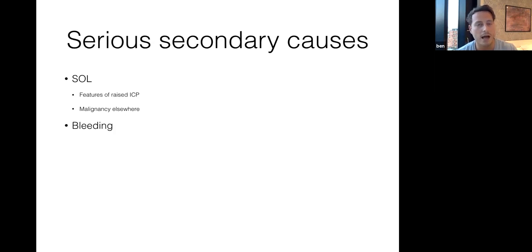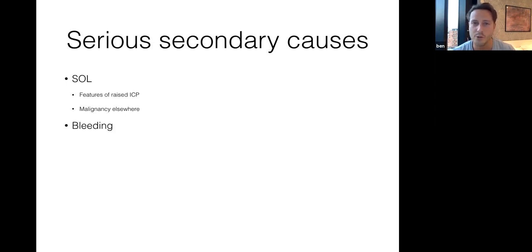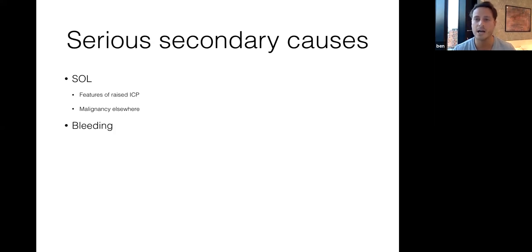You can also have a pseudo space-occupying lesion — idiopathic intracranial hypertension. This used to be called benign intracranial hypertension, but we don't call it benign anymore because it is not benign; a lot of these people end up having neurosurgery. These are classically young women with a high BMI who have features of raised intracranial pressure. When you look at the back of their eyes, you may see papilledema.